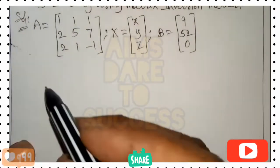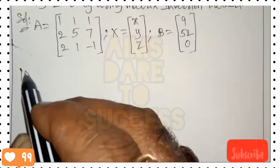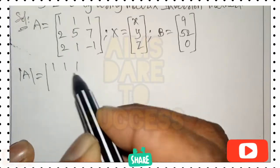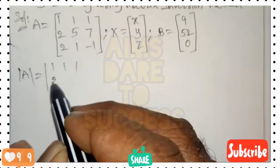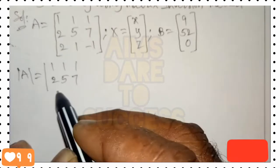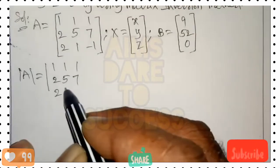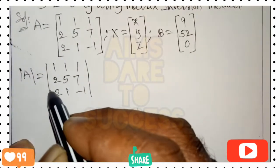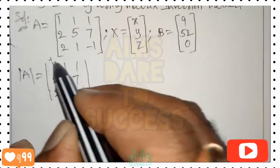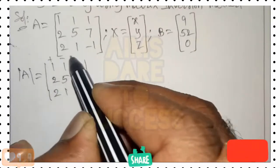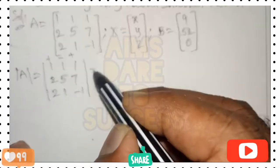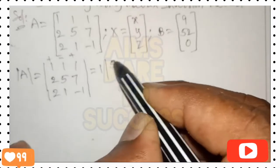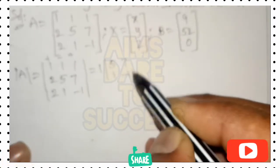Before proceeding, we must find the determinant. If det(A) equals zero, we cannot continue with the matrix inversion method. So det(A) equals the determinant of the matrix [1 1 1 / 2 5 7 / 2 1 -1]. Along the first row, we apply plus, minus, plus signs.